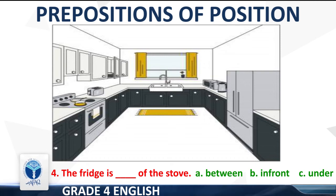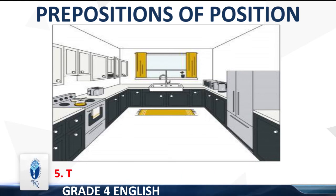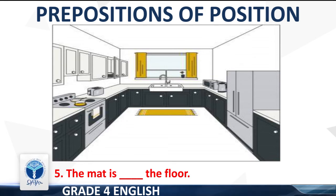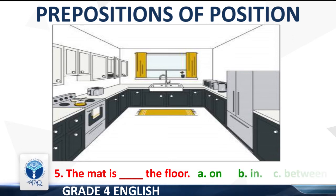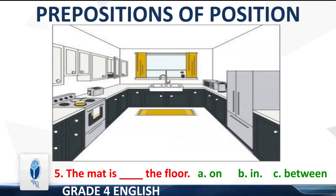Point 5: The mat is dash the floor. Options: A — on, B — in, C — between. The right answer is 'on'. The sentence will be: the mat is on the floor.